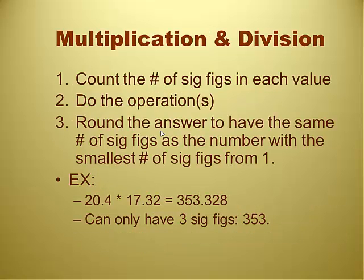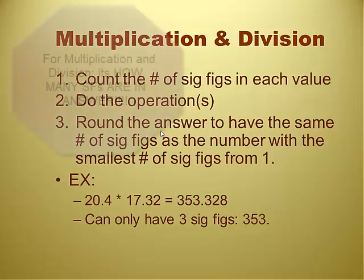Multiplication and division for significant figures. You count the number of significant figures in each value of your problem. Do the operation. Round the answer to have the same number of sig figs as the number with the smallest number of sig figs in the problem. Multiplication and division is number of sig figs.